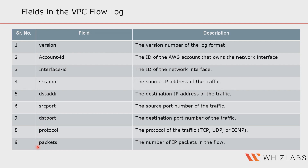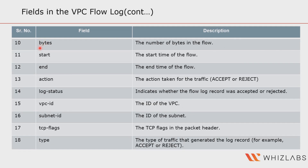Then we have packets — the number of packets transferred during the capture window. These are network packets which contain the data and are a unit of measure of the data. Next you have bytes — the number of bytes transferred during the capture window. Then we have start and end times of the request — the time from when it was received until it ended. After that you have action, which is the action associated with the traffic, indicating what the response from the destination was. Accept means the recorded traffic was permitted by the security groups or network ACLs.